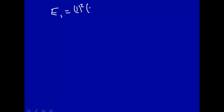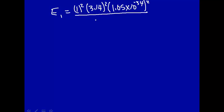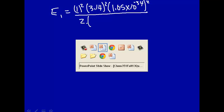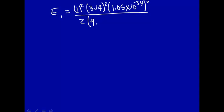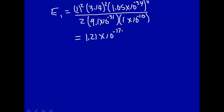We'll go ahead and do that calculation just for the fun of it. For state 1, that'll be 1 squared times pi squared, 3.14, times Planck's constant 1.05 times 10 to the minus 34th — putting everything in SI units so this will come out in joules. That's squared over 2 times the mass. The problem stated it's the average value of the energy of an electron in a 1D box: mass of the electron 9.1 times 10 to the minus 31st kilograms, and the length of the box 1 angstrom, converted to meters: 1 times 10 to the minus 10th meter.